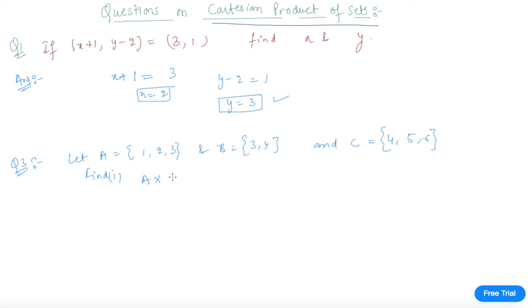We need to find: (i) A × (B ∩ C), (ii) (A × B) ∩ (A × C), (iii) A × (B ∪ C), and (iv) (A × B) ∪ (A × C).